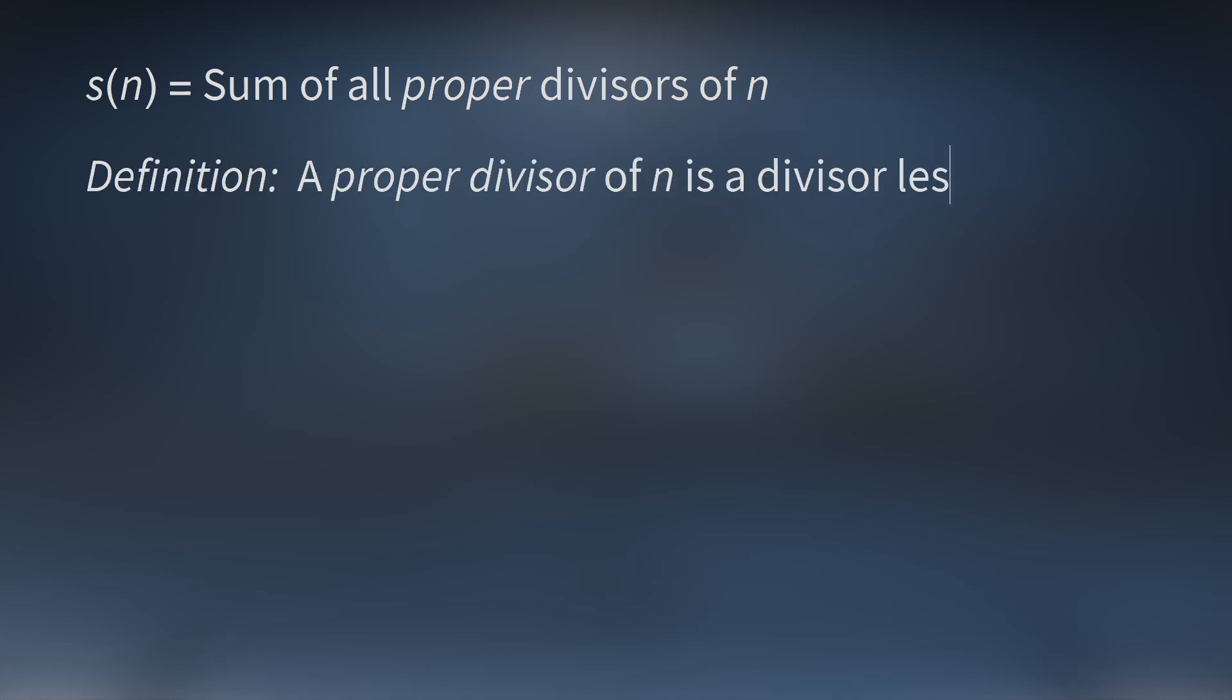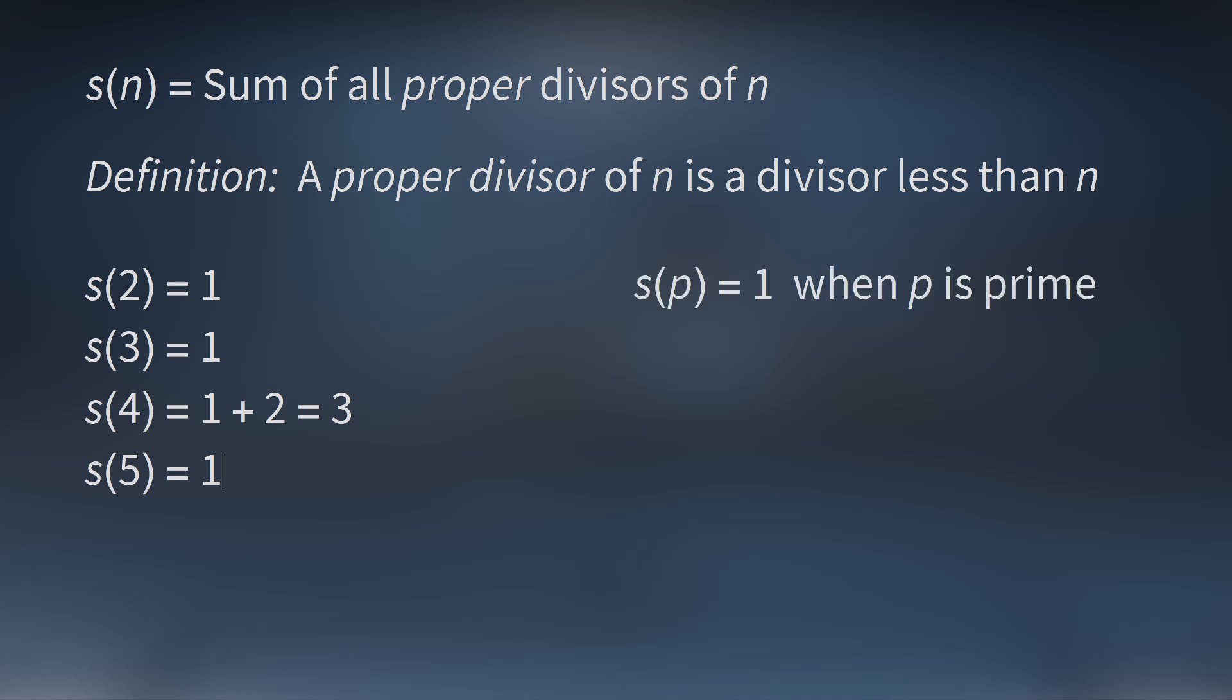For historical reasons, we're going to focus on a third function, s of n. This is the sum of all proper divisors of the integer n. A proper divisor is an integer less than n that divides n. So it's any divisor other than n. We'll start with 2. s of 2 equals 1 because the proper divisors of 2 is just 1. We're not counting the number itself. s of 3 is also 1. s of 4 is 1 plus 2, which is 3. s of 5 is 1. Notice that s of p is 1 for any prime number p. s of 6 is 1 plus 2 plus 3, which is equal to 6. s of 7 is 1. s of 8 is 1 plus 2 plus 4, which is 7.